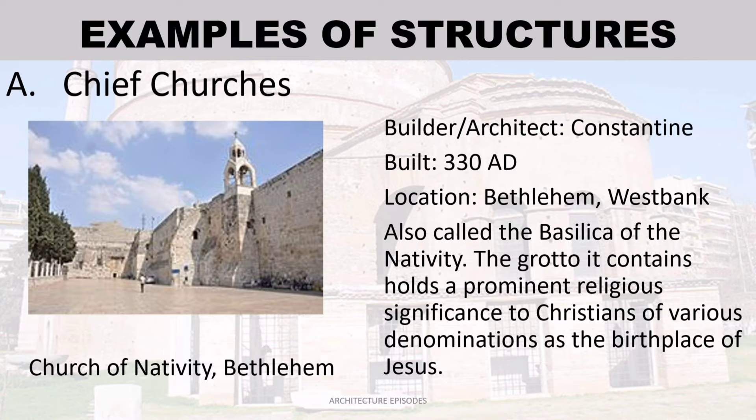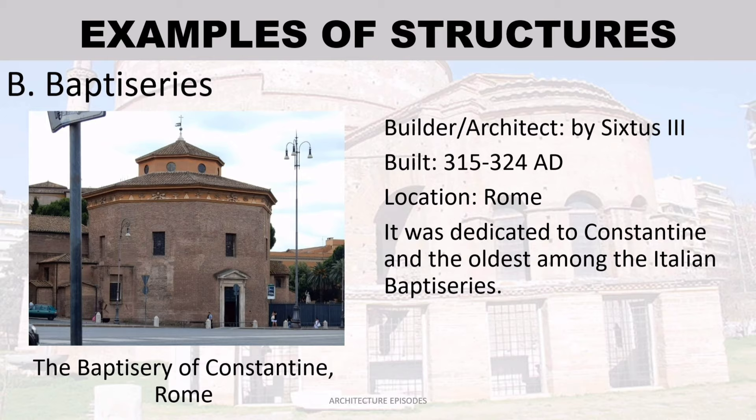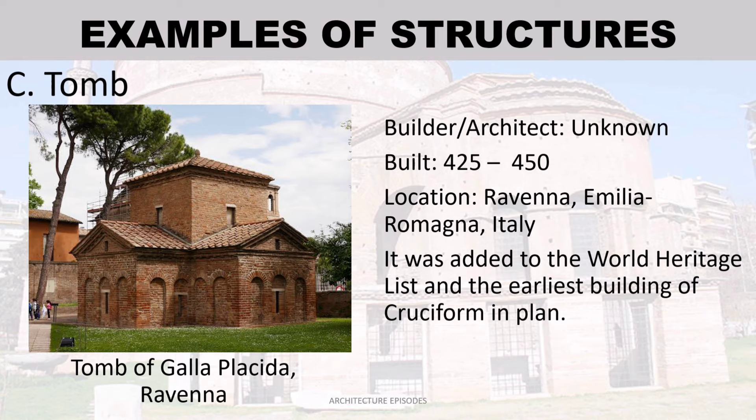The Baptistry of Constantine, Rome — built approximately 315 to 324 AD, it was dedicated to Constantine and is the oldest among the Italian baptisteries. Tomb of Galla Placidia, Ravenna — added to the World Heritage List; it is among the earliest buildings of cruciform plan.